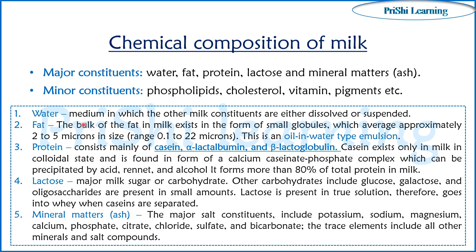First, water acts as a medium in which nutrients are dissolved or suspended. Next is fat, which is mainly present in small globules. The size of these globules is 0.1 to 22 microns, with an average size of 2 to 5 microns. This is the best example of oil-in-water type emulsion.